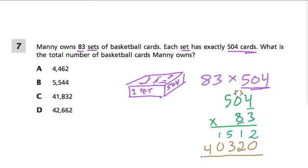So now that we have all this lined up, we can just add. And 2 plus 0 is 2, 1 plus 2 is 3, 5 plus 3 is 8, and 1 plus 0 is 1. And then this is 4 plus nothing, so it's 4 right there. That's 41,832. The answer is C.